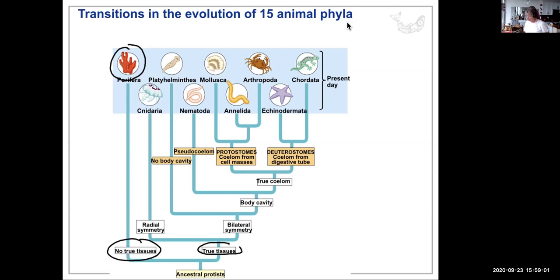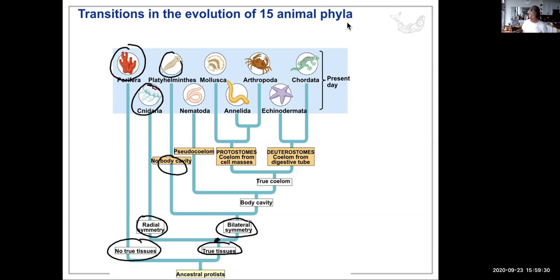True tissue can be considered a transition to the different phyla. Some have radial symmetry, like the Cnidaria, and some have bilateral symmetry — that's another transition from a common ancestor into two different groups. Of bilateral animals, some — like the Platyhelminthes (flatworms) — have no body cavity at all.